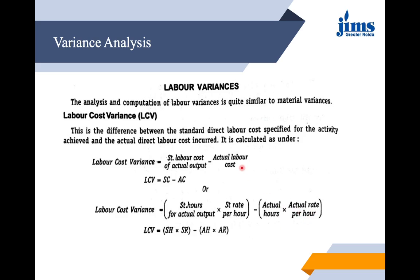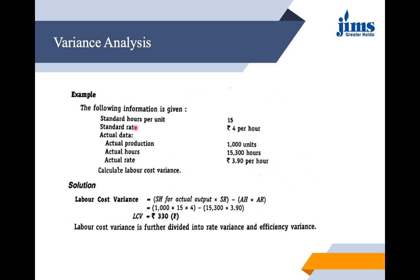Number of hours worked into the rate will give you the cost of labor. Let us see this through an example. Standard hours per unit is given as 15, standard rate is 4, actual production is 1000 units, actual hours is 15,300, and actual rate is 3.90. From here we can see there is a chance to have a favorable variance. We put the values and calculate, and we can see there is a favorable variance of 330 rupees.